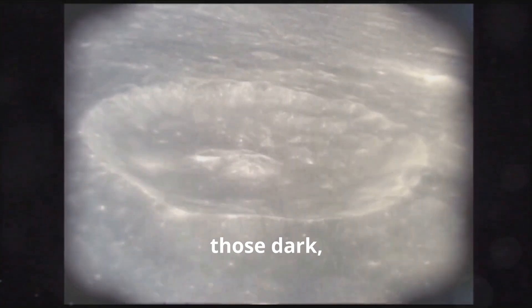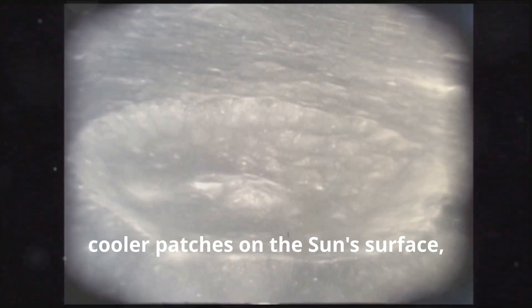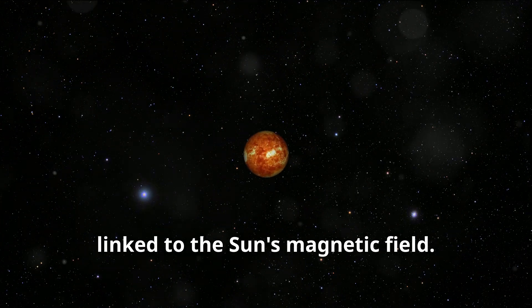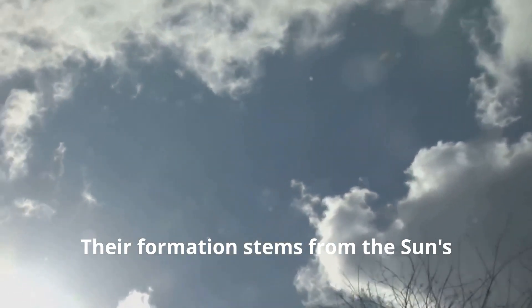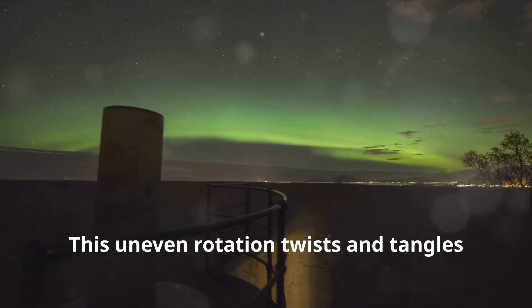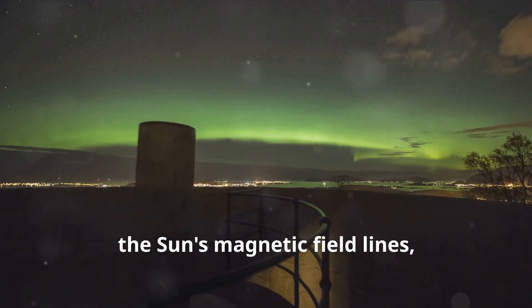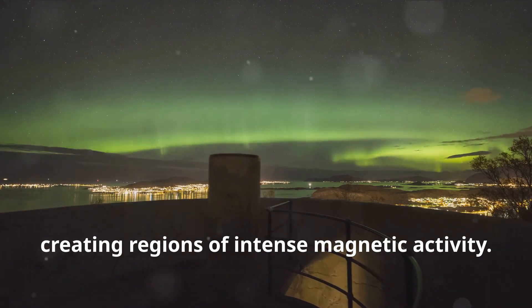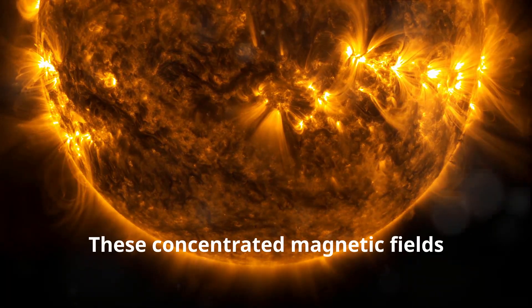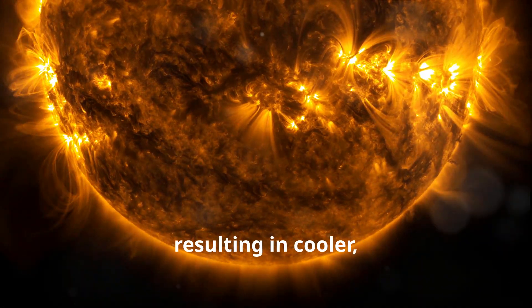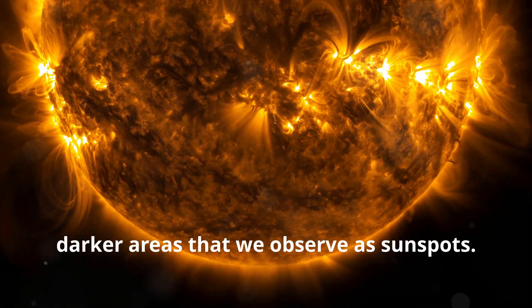Sunspots, those dark, cooler patches on the sun's surface, are fascinating phenomena intricately linked to the sun's magnetic field. Their formation stems from the sun's differential rotation, where different parts of the sun rotate at varying speeds. This uneven rotation twists and tangles the sun's magnetic field lines, creating regions of intense magnetic activity. These concentrated magnetic fields inhibit the flow of heat from the sun's interior, resulting in cooler, darker areas that we observe as sunspots.